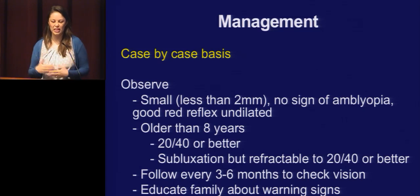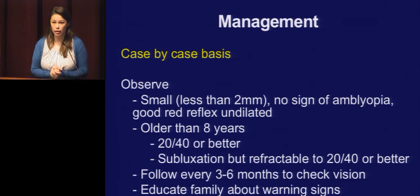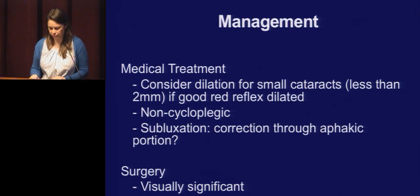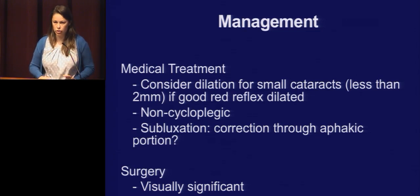Nystagmus or strabismus — anything that seems off, they need to come right back. Older kids with 20/40 or better vision, we usually don't do anything. If they have a subluxed lens but are refractable to better vision, we usually will watch as well. Don't forget to refract through both the aphakic and phakic portion of their visual axis — sometimes you can get them corrected through the aphakic portion and avoid surgery. If you're using a dilating drop, use something with less cycloplegic effect so you're not paralyzing their accommodation.